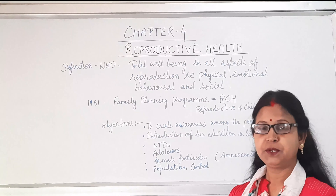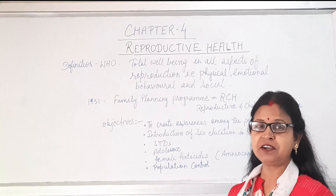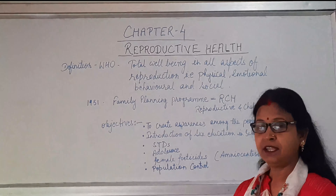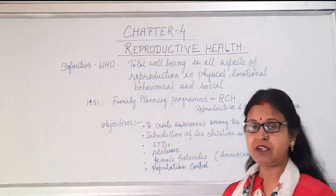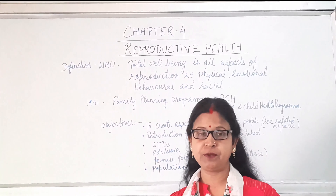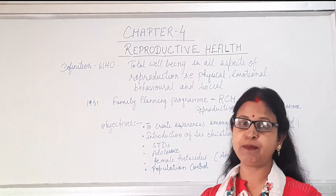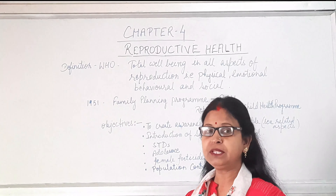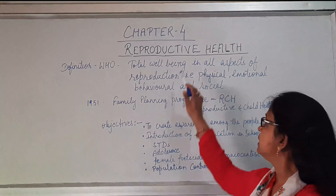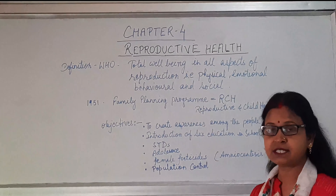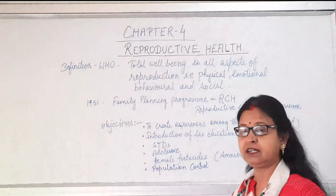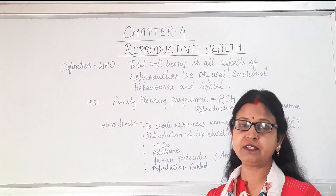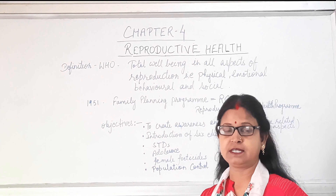Hello students, today we will start with chapter number 4, that is Reproductive Health. Earlier we have discussed about different types of reproduction — asexual, sexual, in human beings, etc. In this chapter we will deal with reproductive health, which is concerned with the normal reproductive system and normal reproductive organs with normal functioning.